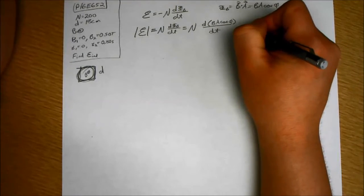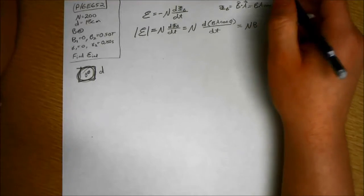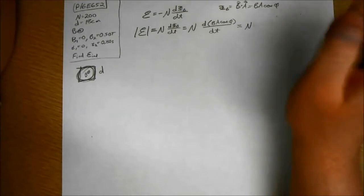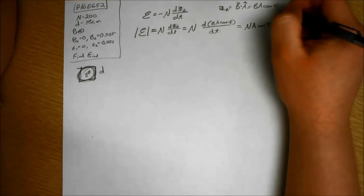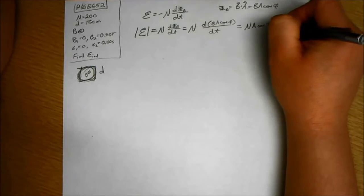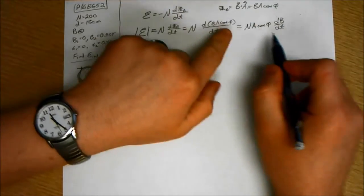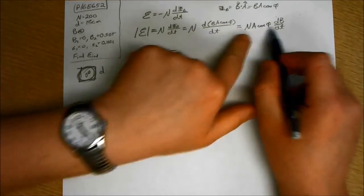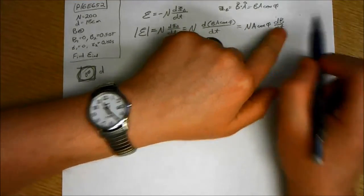So what I'm going to do is I'm going to write N A cosine of phi times dB dt. I pulled these two things out of the differential operator there because they're not changing. They're remaining constant. Only the magnetic field is changing.